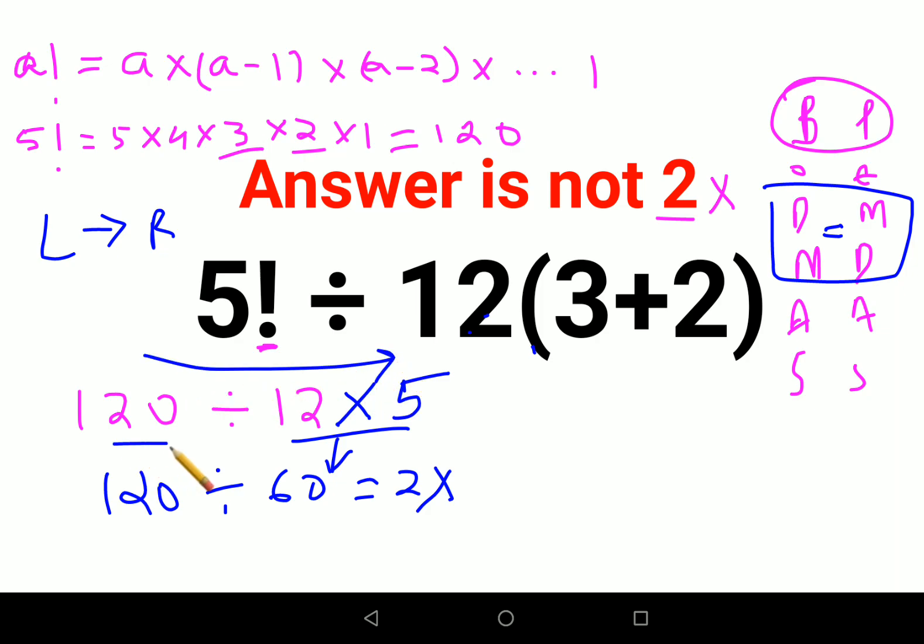So first we will do 120 ÷ 12, that is 10, then 10 × 5. The answer comes out to be 50. I hope this is very clear to everyone. That's it for today. I will see you in the next video.